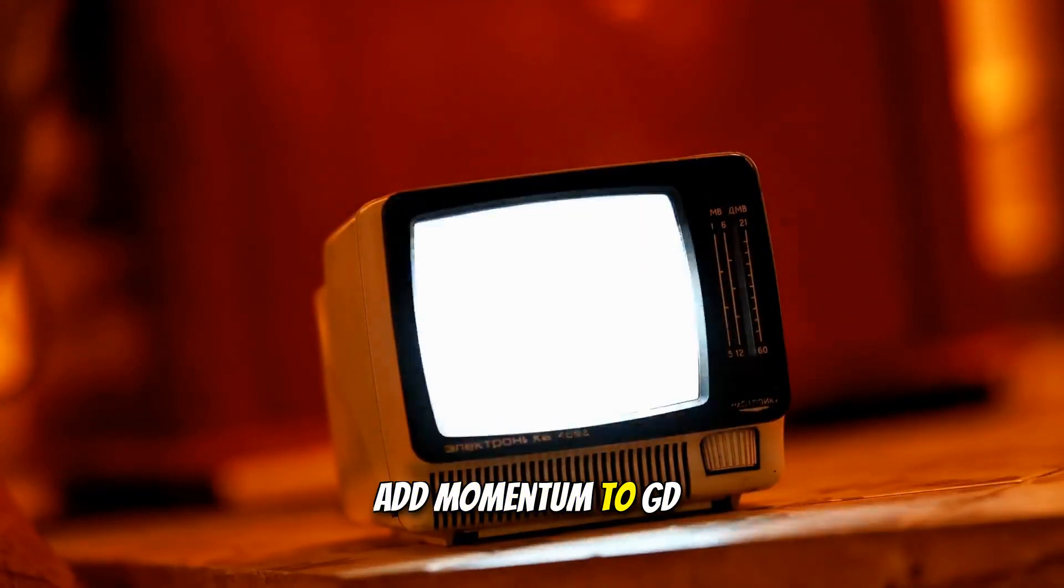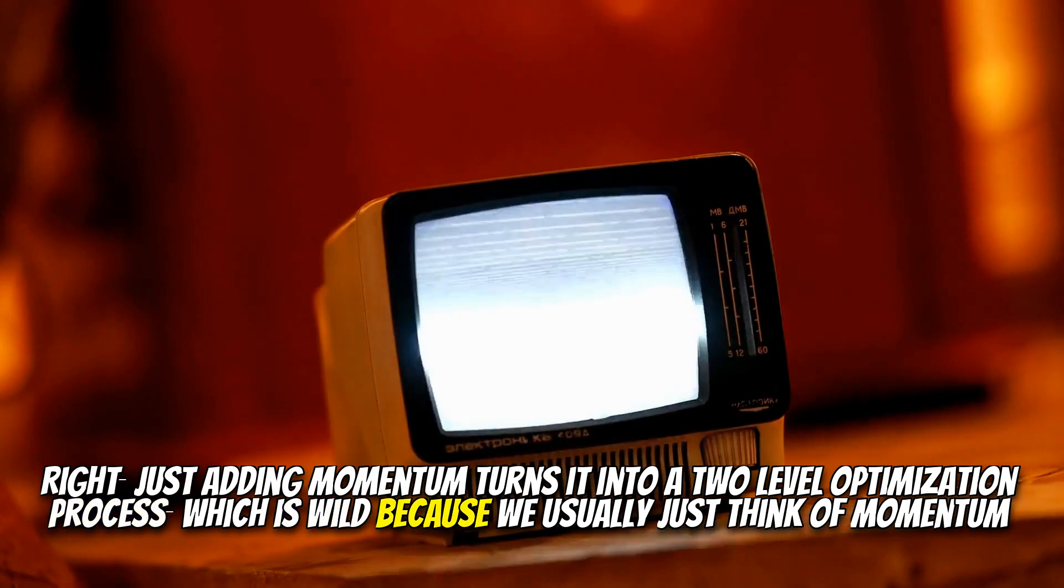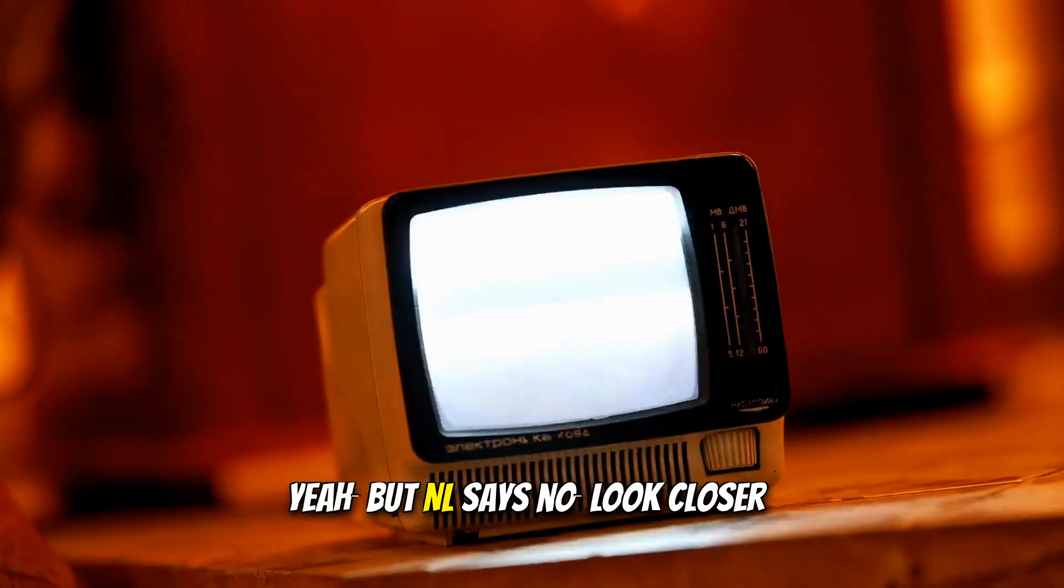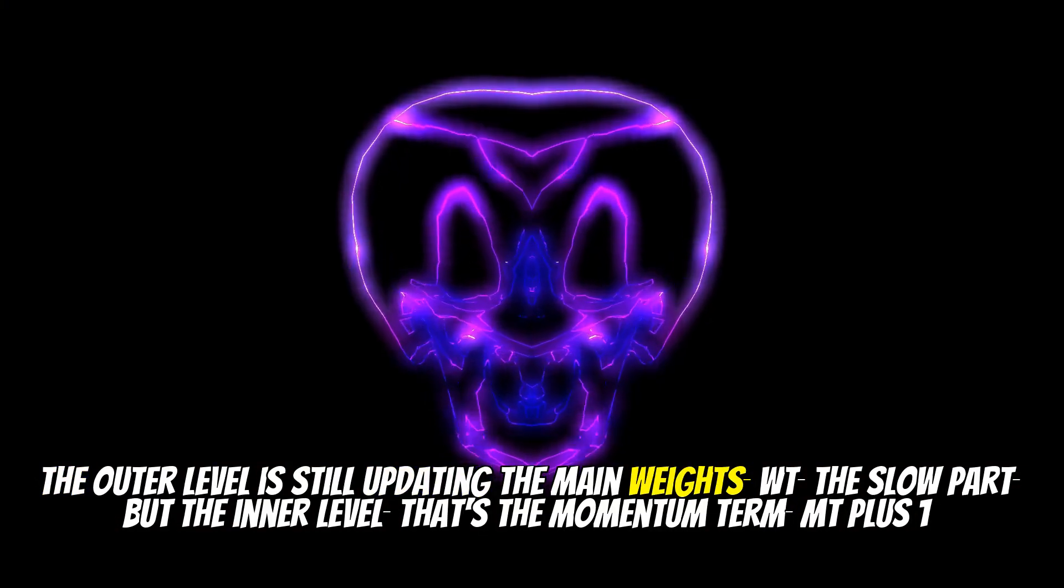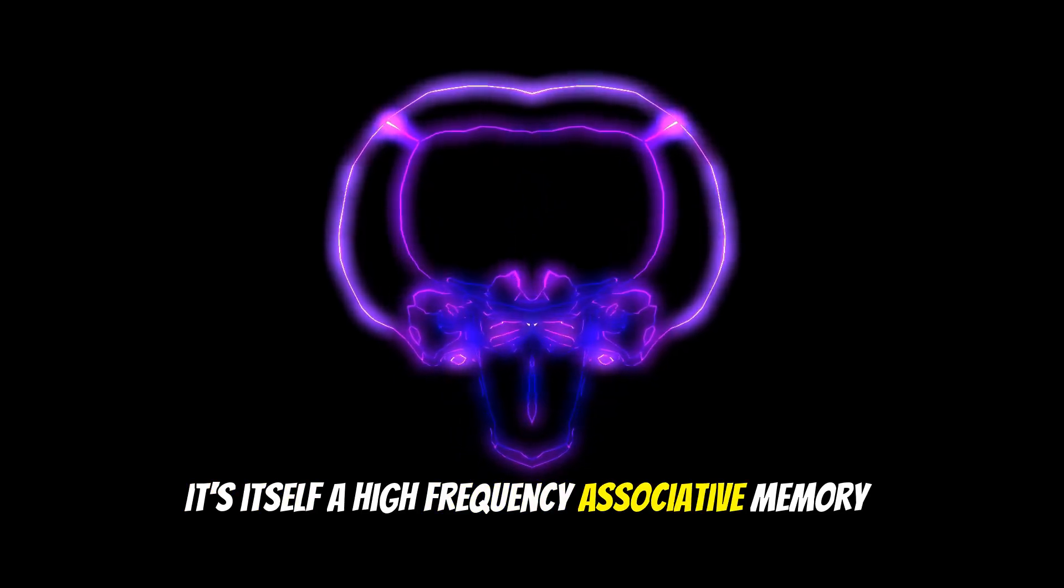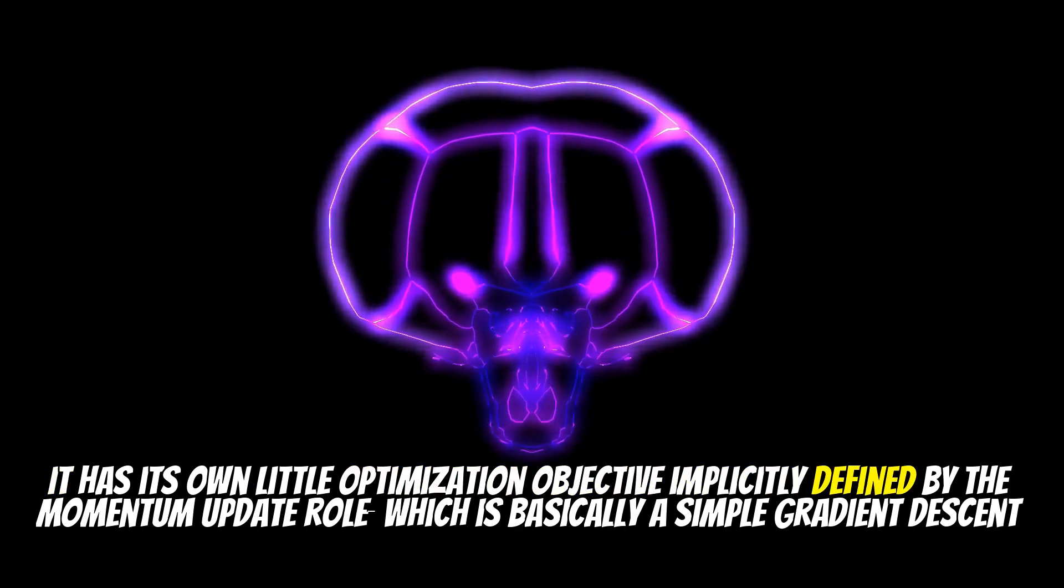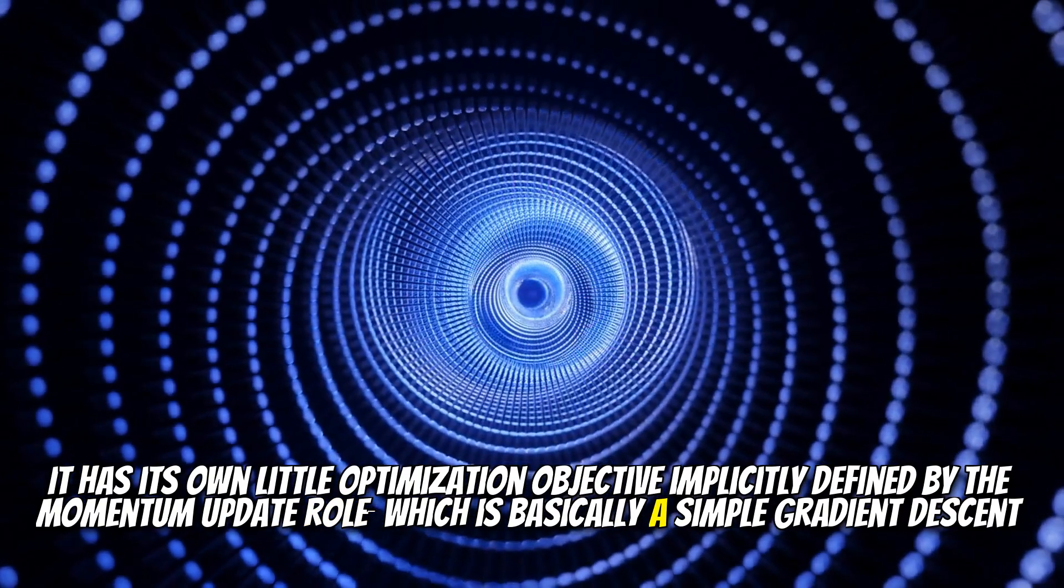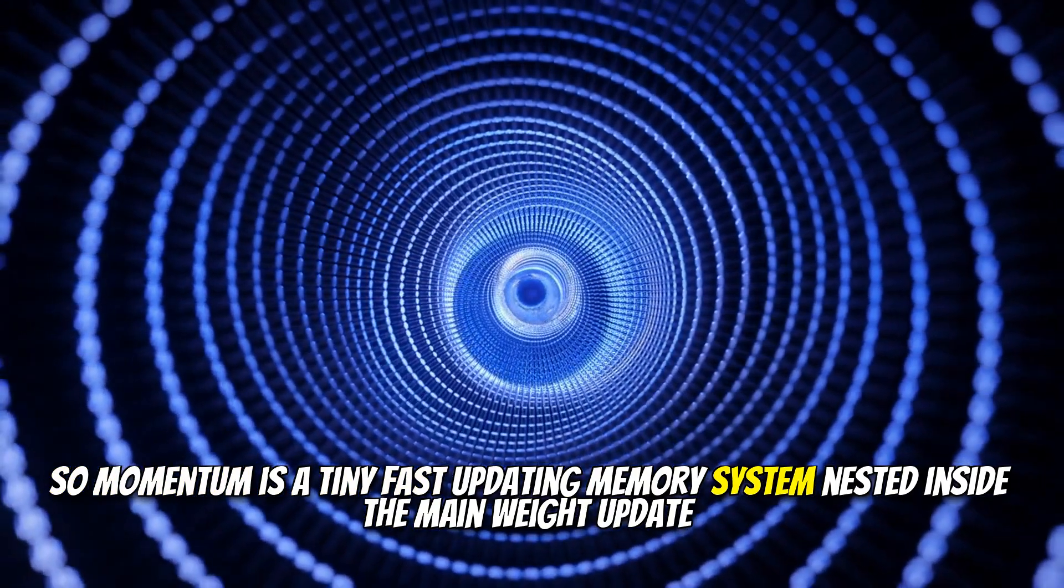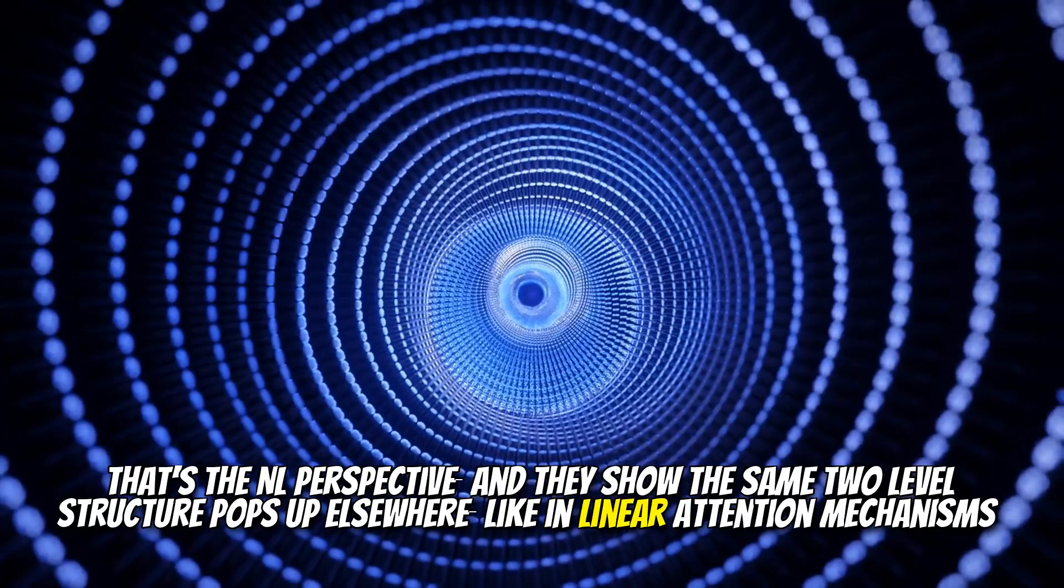Yep. The system, the MLP, is learning to map an input data point, XT plus 1, to what they call the local surprise signal, or LSS, which is basically just the gradient of the loss with respect to the output. So the gradient tells you how surprised the model is by the new data point, given the current weights and the objective. Exactly. It quantifies the mismatch. The MLP, the associative memory, is learning to compress the input X into the surprise needed to adjust the weights and reduce future surprise. Okay. Simple enough. But things get interesting fast. Add momentum to GD. Suddenly it's not one level anymore. Right. Just adding momentum turns it into a two-level optimization process, which is wild because we usually just think of momentum as, you know, helping smooth the path or speed things up. Like a ball rolling downhill with inertia. Yeah. But NL says, no, look closer. The outer level is still updating the main weights, WT, the slow part, but the inner level, that's the momentum term, MT plus 1. It's itself a high-frequency associative memory.